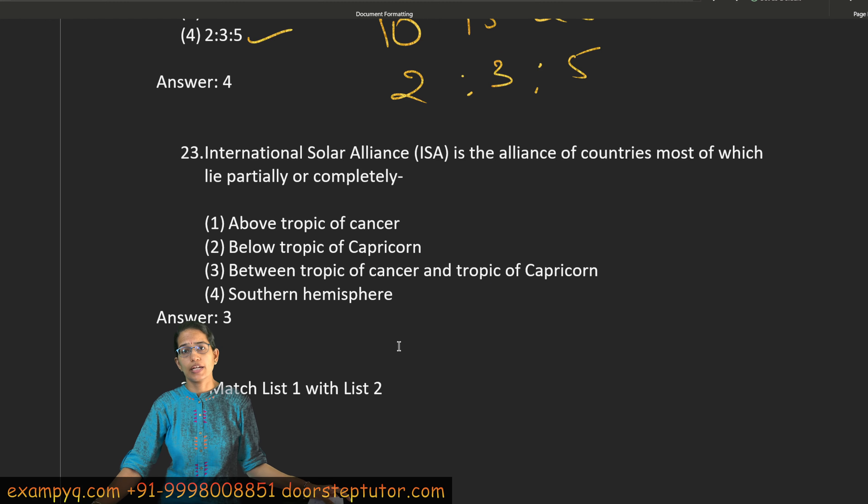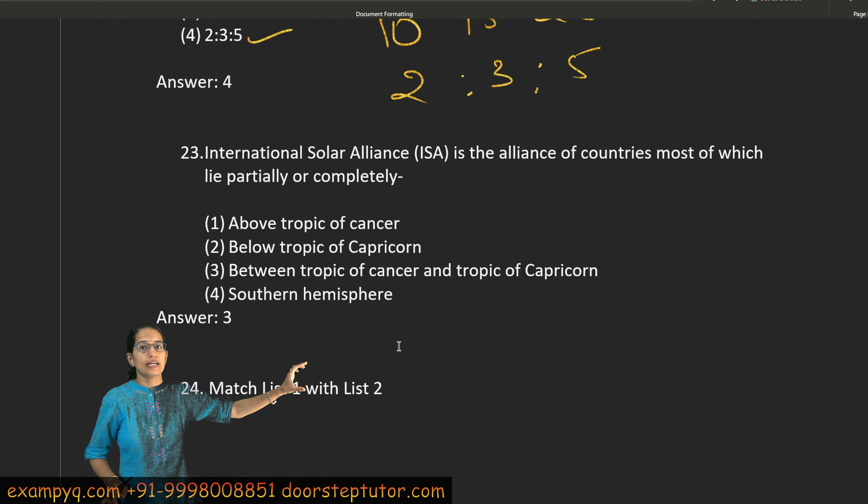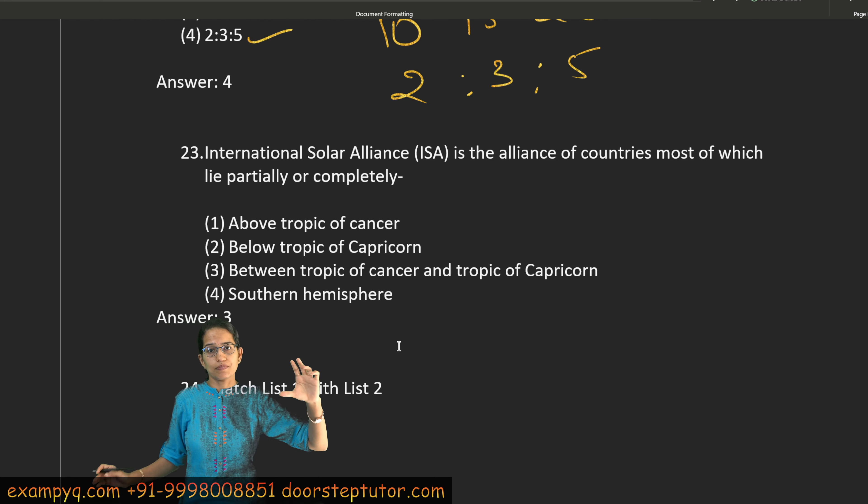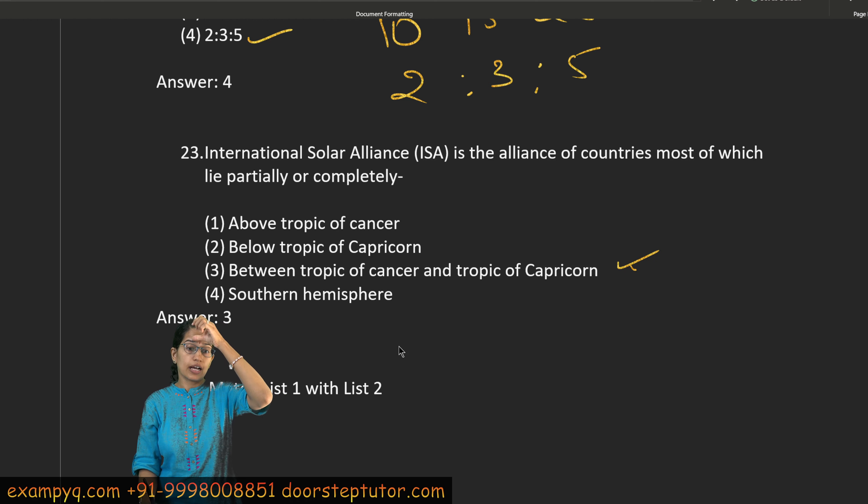The next question is about International Solar Alliance. Look, International Solar Alliance is an important topic. If you ask a question on this topic, then you have to take care of these points. In this case, whatever countries come to the topic, in all countries in the Tropic of Cancer and Capricorn, all countries can do the same thing. So here there will be option 3 correct. There is a direct question. We have covered it in the classes.